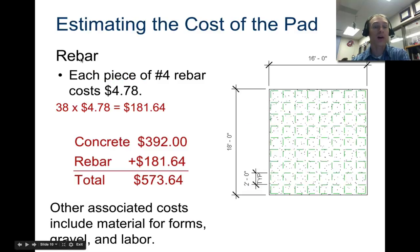We have to figure out the cost for all the rebar. If each piece of number four - number four represents the thickness, the diameter of the rebar - if each piece costs $4.78 and we have 38 of them, then we have a total cost of $181. Plus the concrete gives us $573.64.